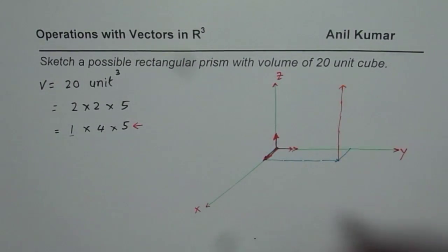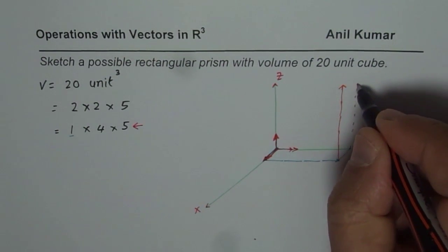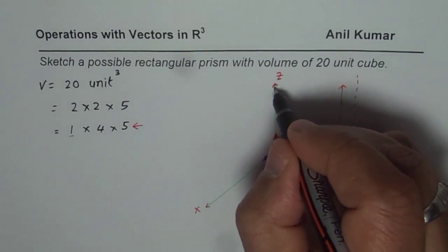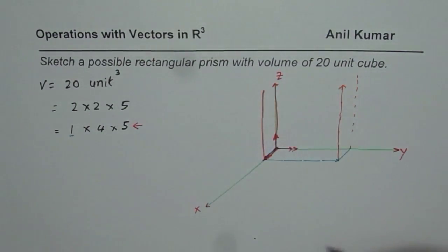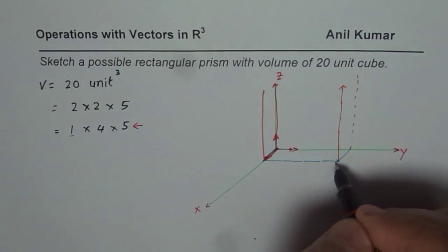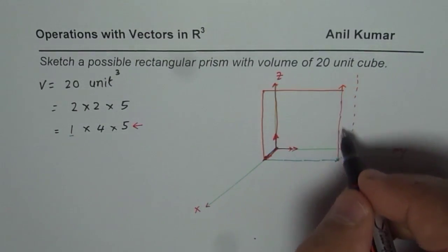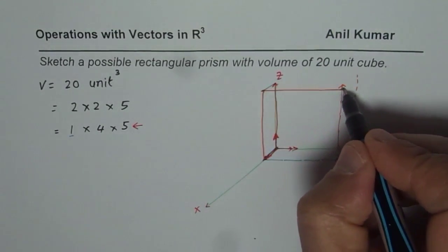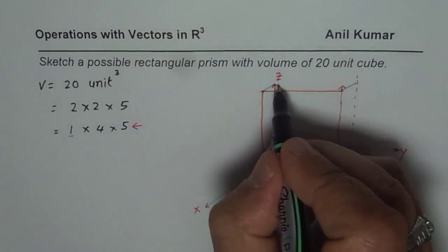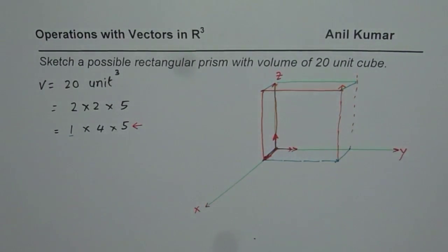Now to complete this rectangular prism I have to go five units from each and every point. So we have five units here, five units here, and five units here. We have formed one rectangular prism — that becomes my front side. Then connecting the x-component and y-component gives us the prism, and the volume of this prism is 20 unit cubes.